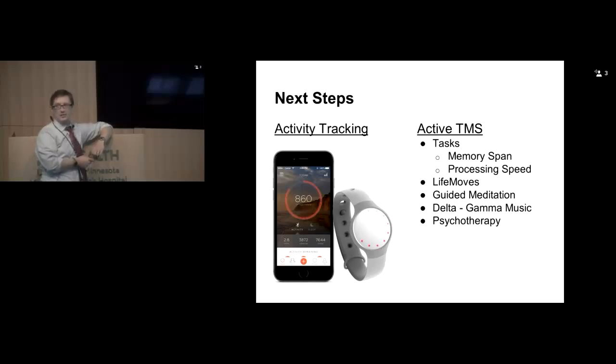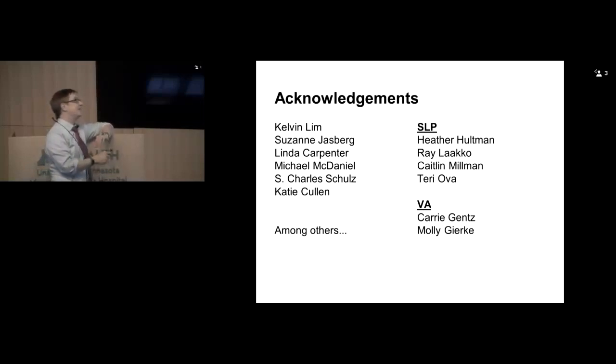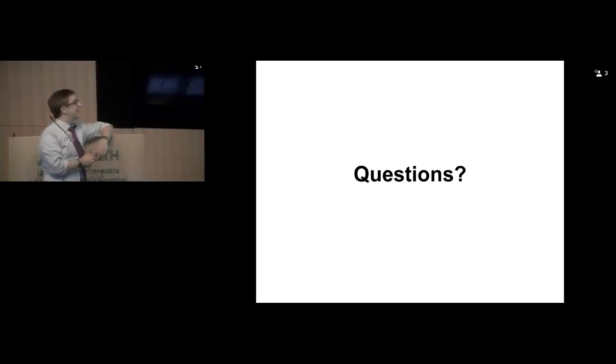Final thing is next steps. We really need to get more information around how people are actually doing. We're going to add activity tracking because research has reported that people start to get activated, sleeping better, doing more things day to day. So we want to see if we get their steps up. The other thing is while they're getting TMS right now, our wonderful operators are great at sitting and chatting, like supportive psychotherapy. But we'd like to formalize that. Maybe do some tasks, try Life Moves, guided meditation. Some people are playing delta to gamma music, all the different EEG levels written into those ranges. And psychotherapy potentially. Acknowledgments, a ton of people have worked on this. It takes a village to raise a new program.